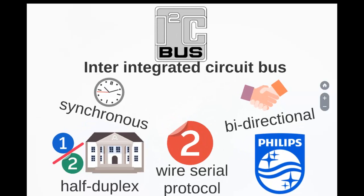The first onboard communication interface is the I2C bus, invented by Philips in the early 1980s. It is a multi-master, multi-slave protocol. Devices connected to the I2C bus can act as either the master or slave device. The master device is responsible for controlling communication by initiating or terminating data transfer, sending data, and generating the necessary synchronization clock pulses. Slave devices wait for commands from the master and respond upon receiving them.